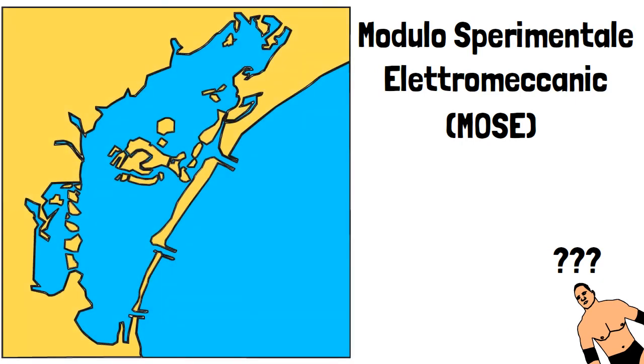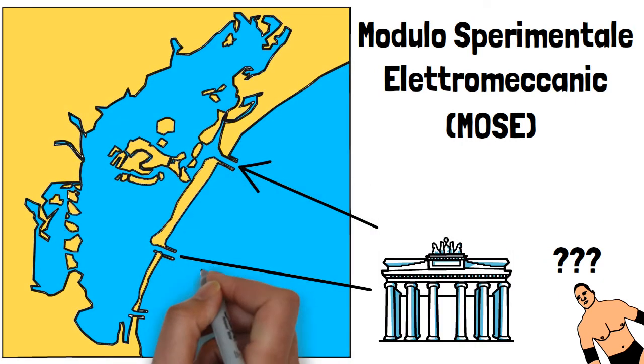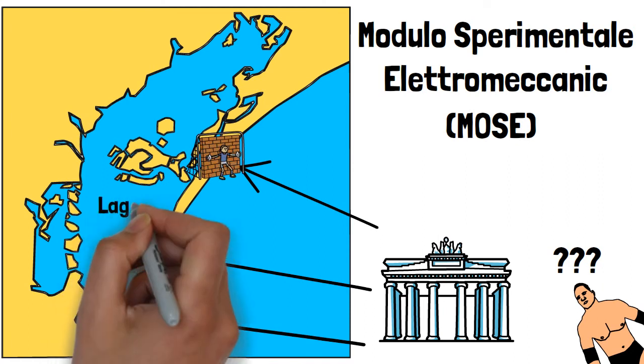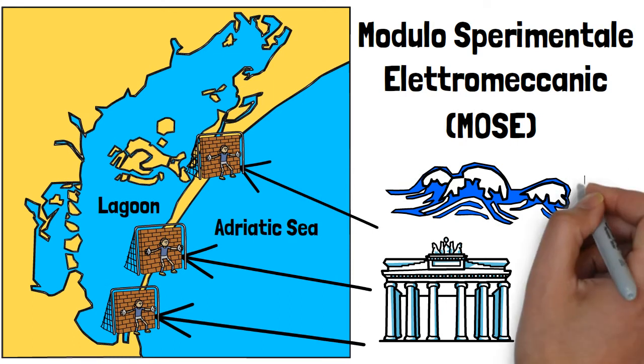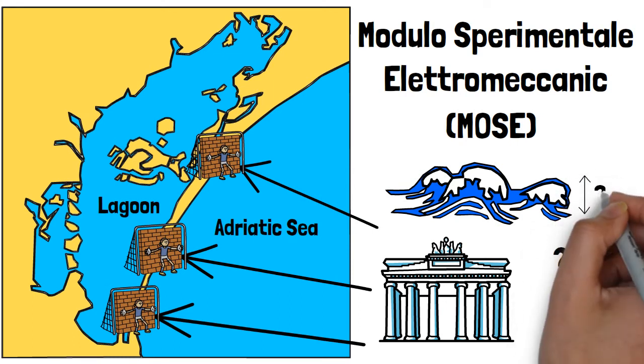This system consists of rows of mobile gates at the inlets to the lagoon, which provide a barrier between the lagoon and the Adriatic Sea at high tides and is designed to protect the city against tides up to 3 meters.